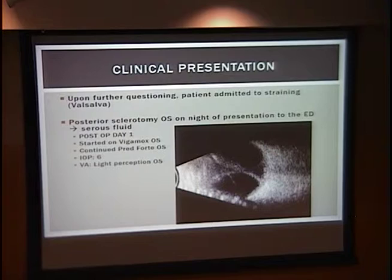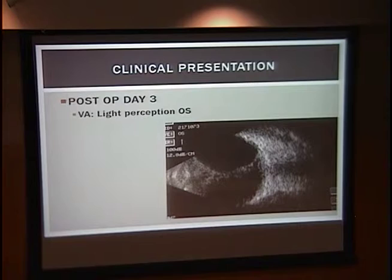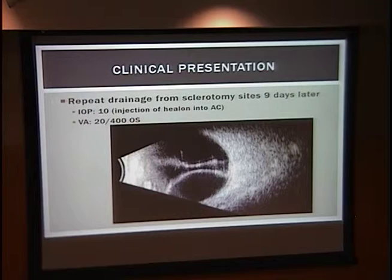Back to our patient: upon further questioning, he admitted to straining earlier that day, which could have contributed to his acute effusion. He was taken back that night for posterior sclerotomies in the left eye, and serous fluid was drained from the wounds. On postoperative day one, B-scan showed he still had appositional choroidal effusions. He was started on Vigamox and continued on Pred Forte, with a pressure of 6, and was still light perception. On postoperative day three, he was still light perception with some apposition remaining.